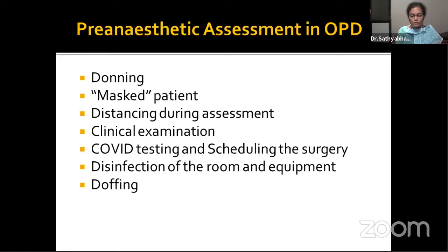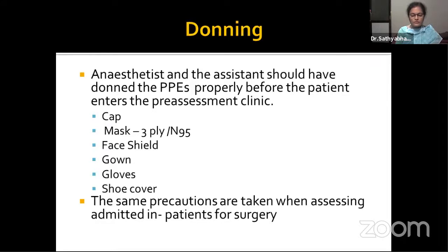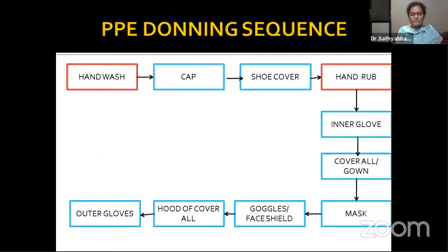Pre-anesthetic checkup covers donning, mask use, patient distancing, clinical examination, COVID testing, scheduling of surgery, disinfection of room and equipment, and doffing. The anesthetist and assistant should have donned PPE properly — having removed watch, jewelry, pen, ID card — before the patient enters the pre-assessment clinic. PPE includes a cap, shoe cover, gloves, gown, mask (either three-ply or N95), and face shield or goggles.